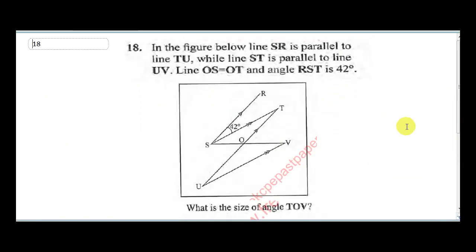Question 18 says: in the figure below, line SR is parallel to line TU, while line ST is parallel to line UV. Line OS equals OT, and angle RST is 42 degrees. What is the size of angle TOV? We are looking for angle TOV.